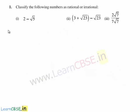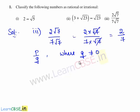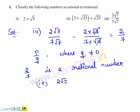Now let us move on to the third bit of the question. The third bit is 2 root 7 divided by 7 root 7. This can be written as 2 times root 7 divided by 7 times root 7. The common factor root 7 gets cancelled and we are left with 2 by 7. Since 2 by 7 is of the form p by q where 2 and 7 are integers and q is not equal to 0, therefore 2 root 7 by 7 root 7 is a rational number.